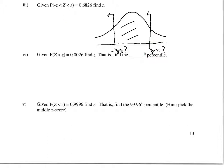Remember that capital Z always represents the curve — the area under the curve between two values that are symmetrically apart. So once we find one, we'll know the value of the other one.